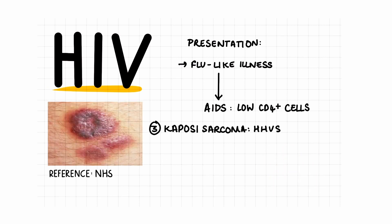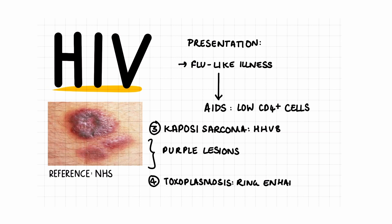Kaposi's sarcoma is caused by the HHV-8 virus and patients have purple papules on their skin and mucosa, as you can see here. Toxoplasmosis presents as ring-enhancing lesions on CT scans of HIV patients.